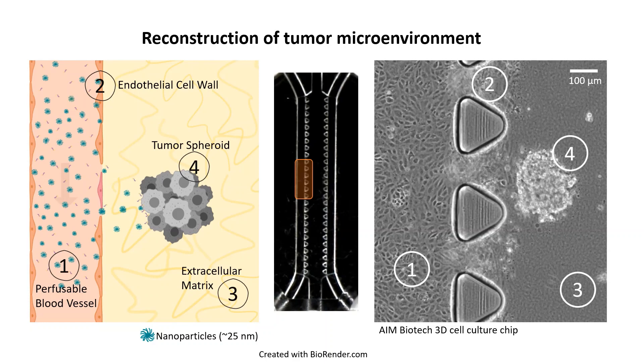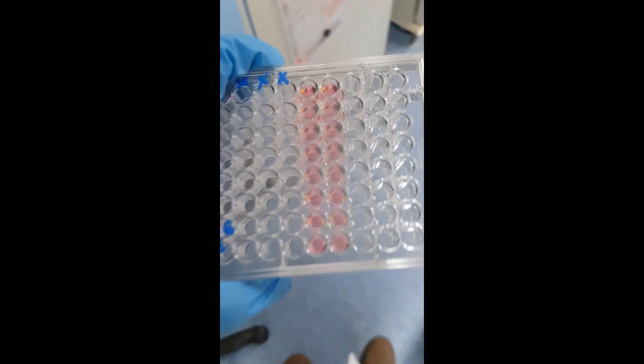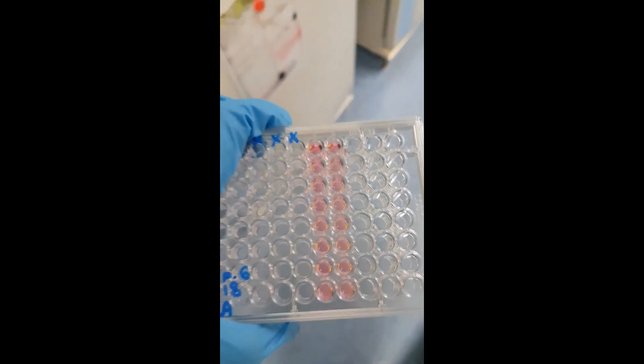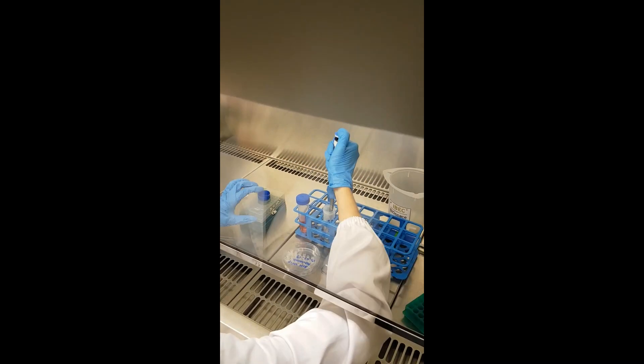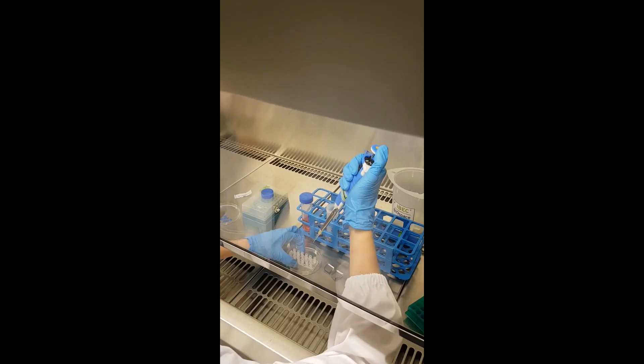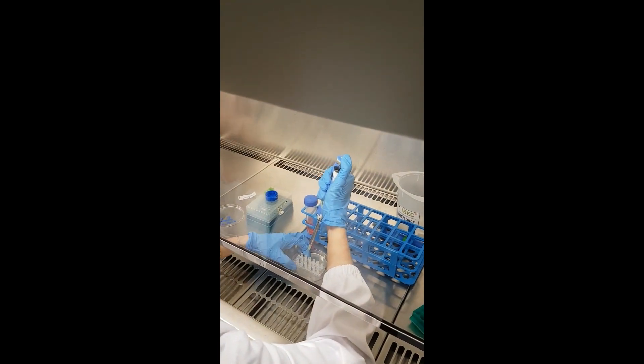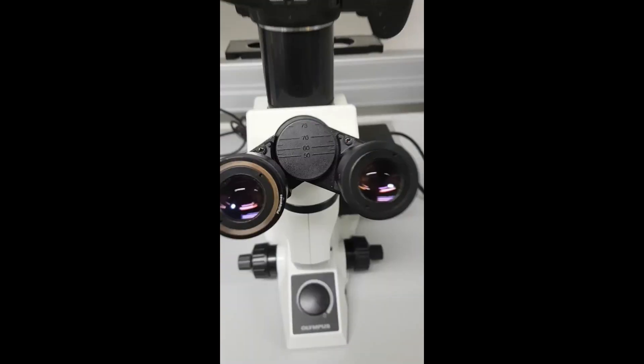From the concept to the lab. First, cancer spheroids are grown in a multi-well plate. Then, they are embedded in the extracellular matrix in the chip.